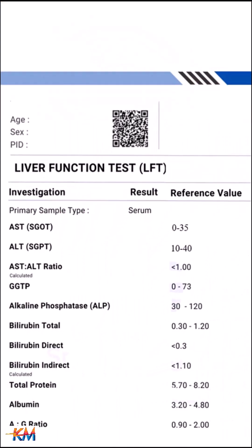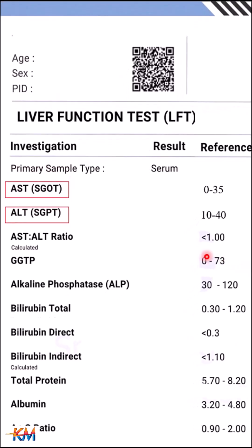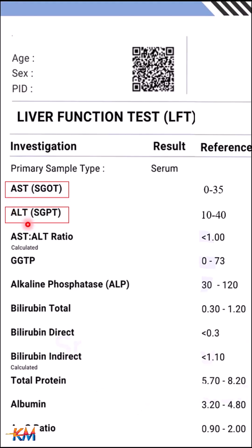Hepatitis is identified by focusing on two enzymes specific to inflammation of hepatocytes. These are AST and ALT. Their reference ranges are from 0 to 35 and from 10 to 40, respectively.